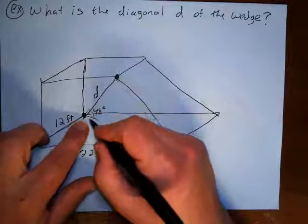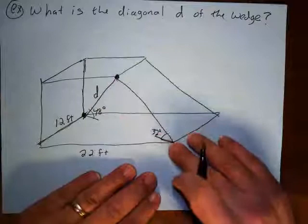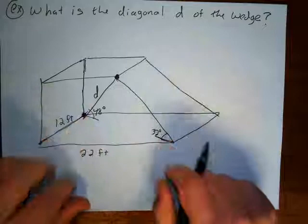Now it gives us these angles. It gives us that the diagonal to the base here makes a 48 degree angle. And then it also tells me that this wedge here to the base is a 32 degree angle. So it gives me these angles. And then it gives me the length.